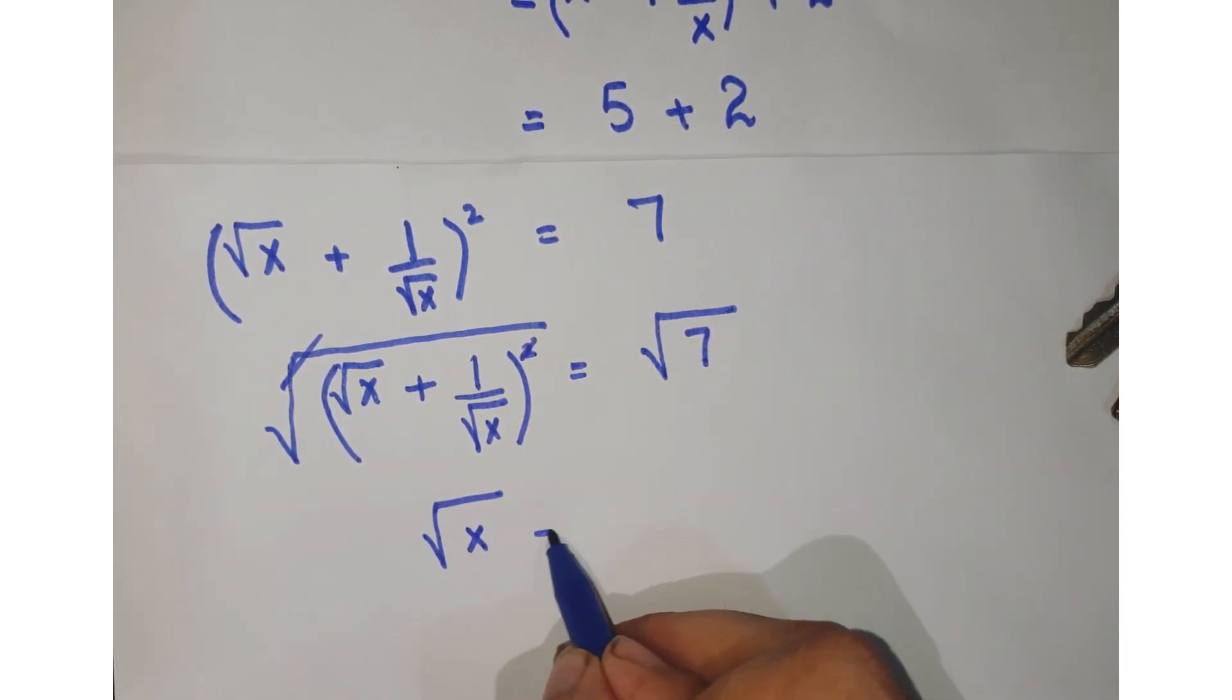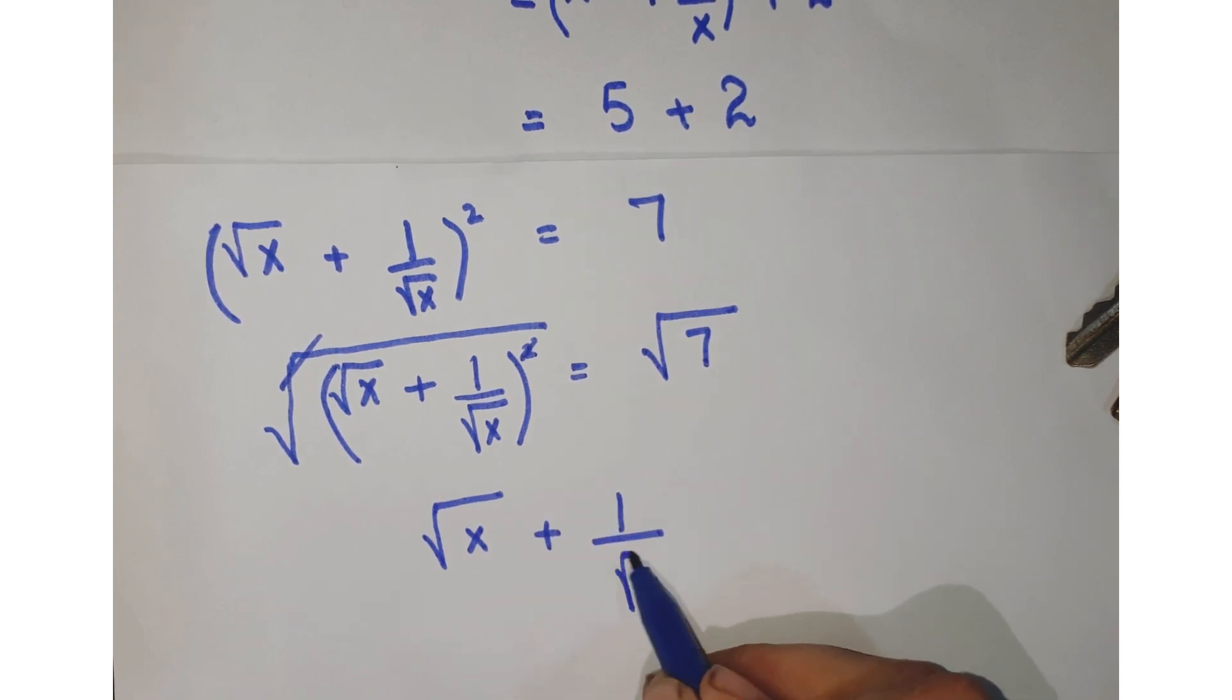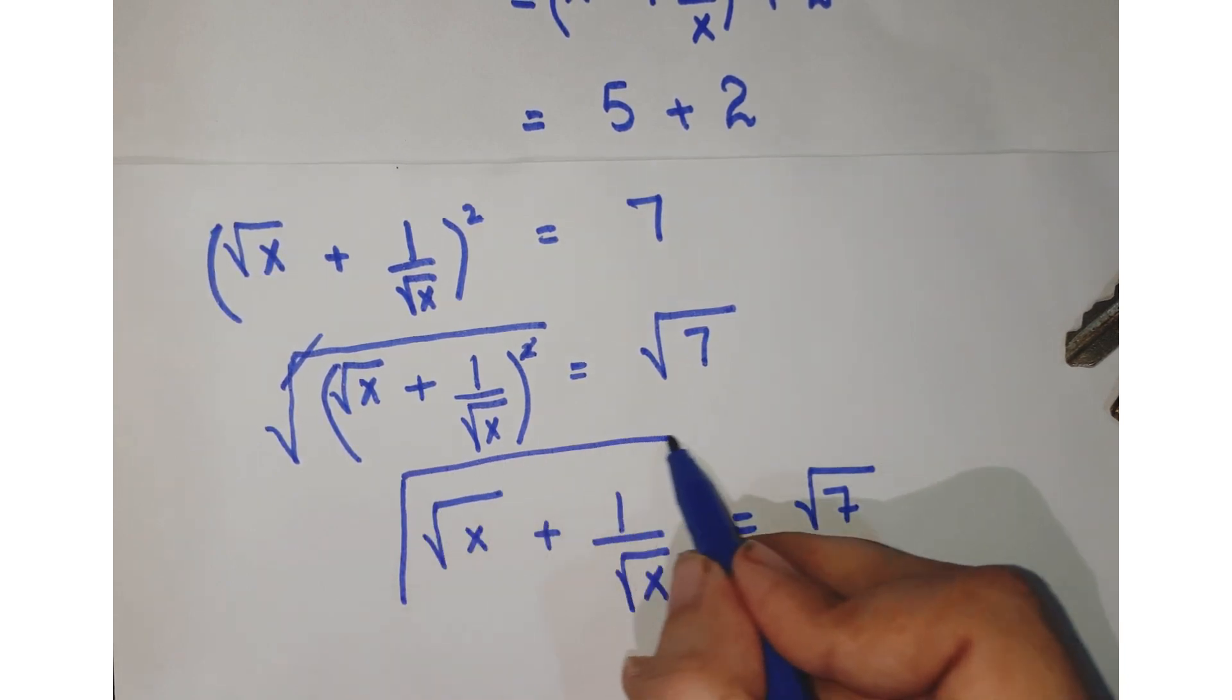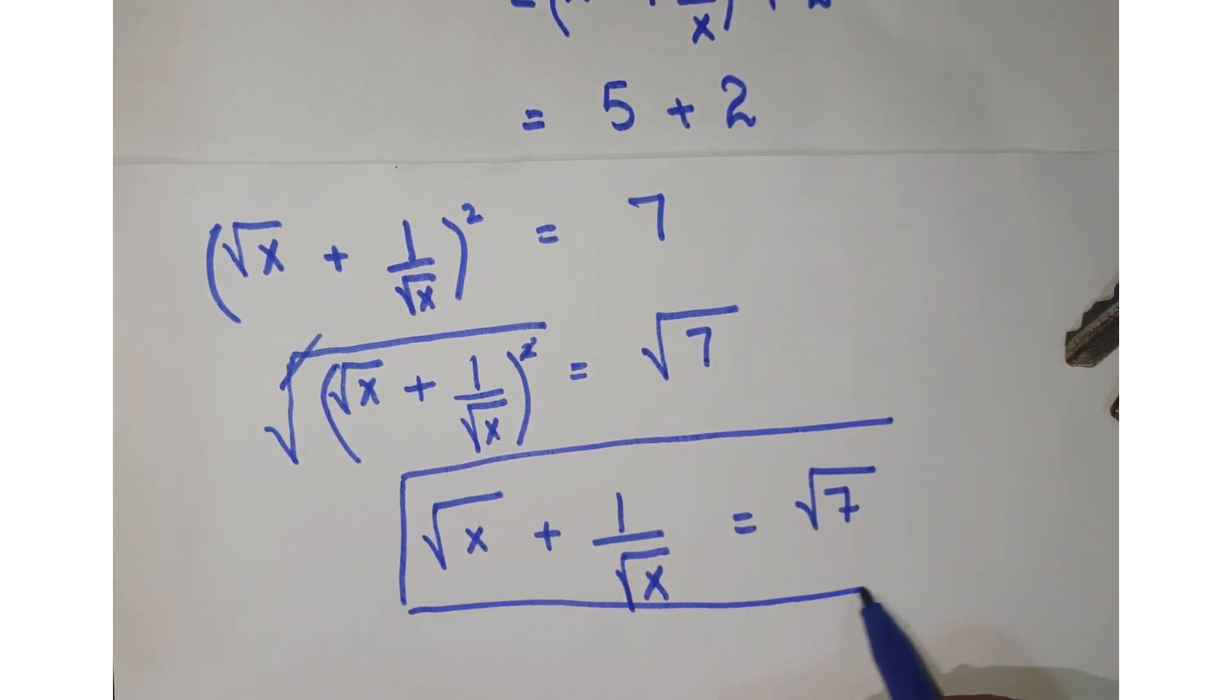So our required value, that is square root x plus 1 over square root x, equals square root 7. And this is our required answer.